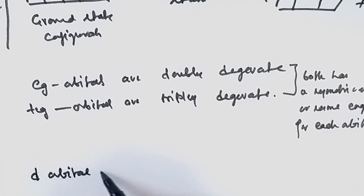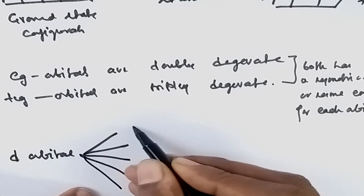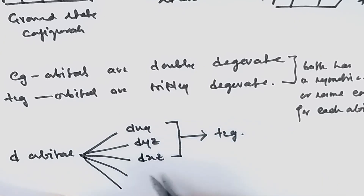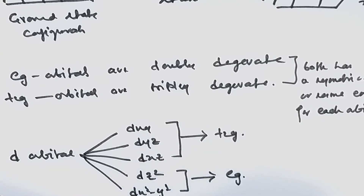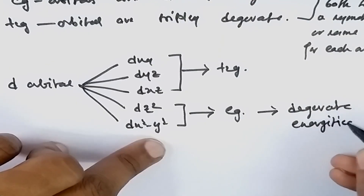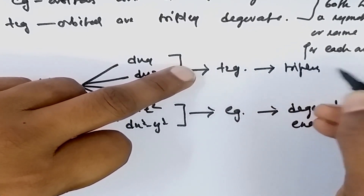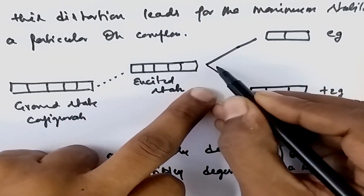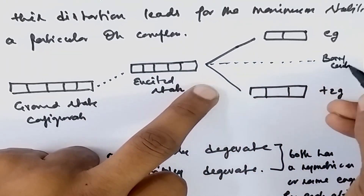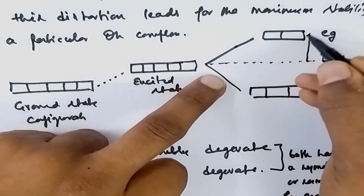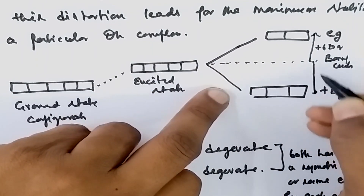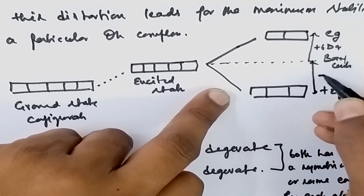The d orbital consists of five different degenerate orbitals. The first three — dxy, dyz, and dxz — are termed t2g orbitals, whereas dz² and dx²-y² are termed eg orbitals. In octahedral complexes, the energy gap from the barycentre for the eg orbital is +6Dq, whereas the difference from the barycentre to the t2g orbital is -4Dq.